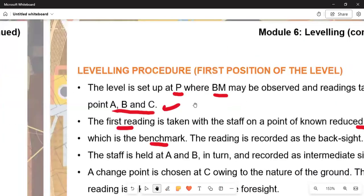We can be asked the question to say the leveling procedure first position of the level. The level is set up at P where A may be observed and readings are taken at point A. The first reading is taken with the staff on a point of known reduced level, the benchmark. The reading is recorded as the back sight. And the staff is held at A and B in turn and recorded as an intermediate sight.